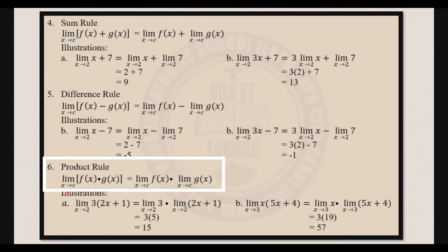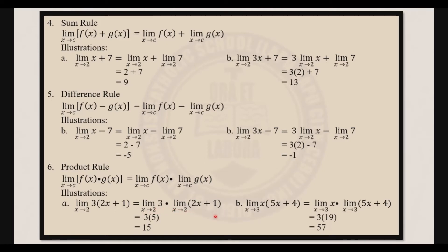Now let's have the product rule. It states that the limit of f of x times g of x as x approaches c is equal to the limit of f of x as x approaches c times the limit of g of x as x approaches c. For example, the limit of 3 times 2x plus 1 as x approaches 2 equals the limit of 3 as x approaches 2 times the limit of 2x plus 1 as x approaches 2. Following the constant rule, the limit of 3 is 3. Following the sum rule, the limit of 2x plus 1 as x approaches 2 gives us 5. So 3 times 5 is 15.